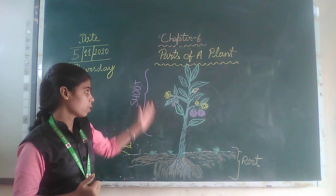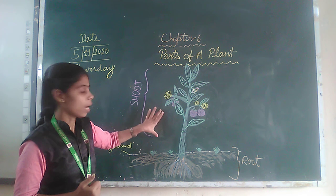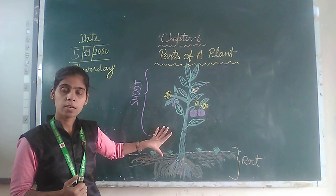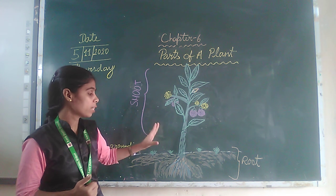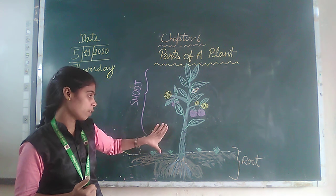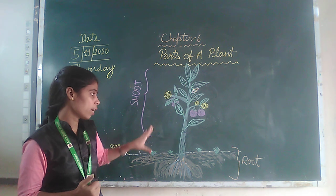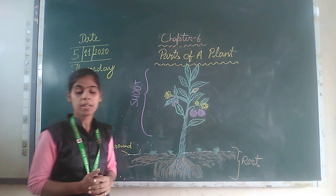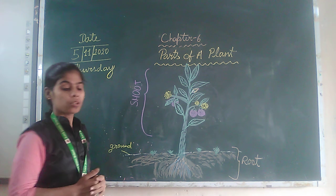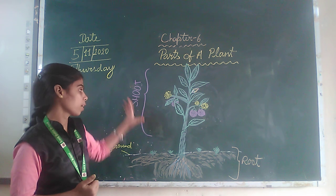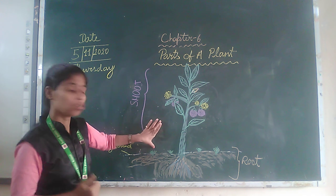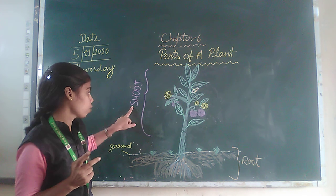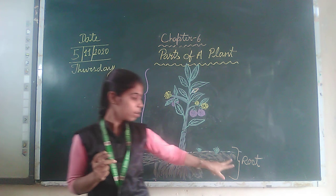Here we can see the picture of a plant. If you look at the picture, we can see that a plant's body is divided into two main parts. We can divide the plant into two main parts: one is the shoot and the other is the root.